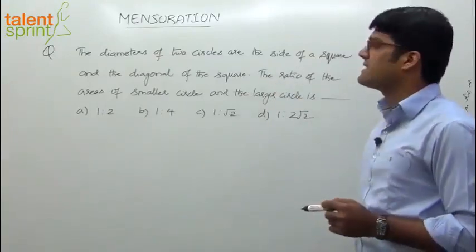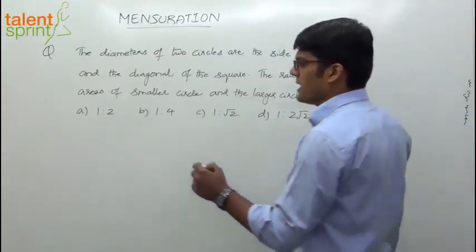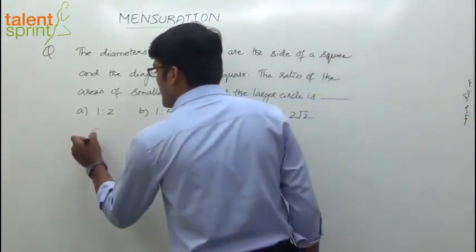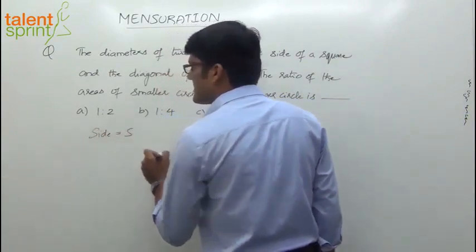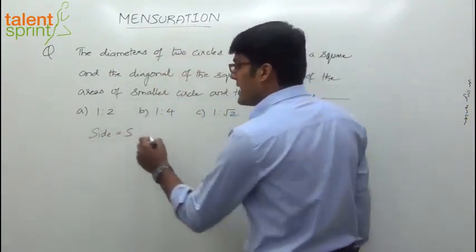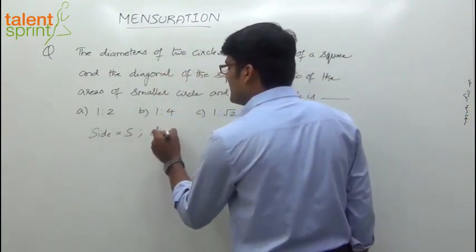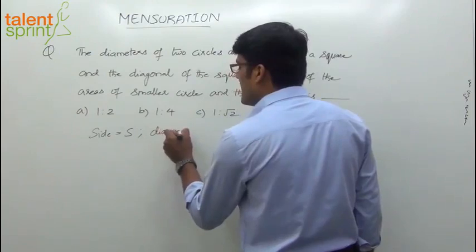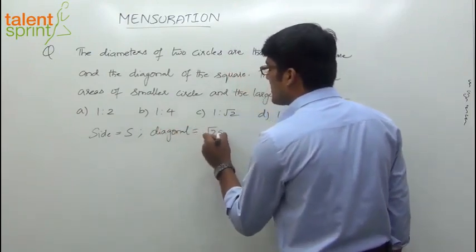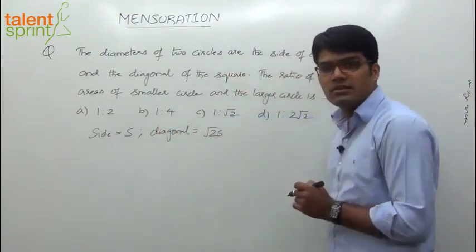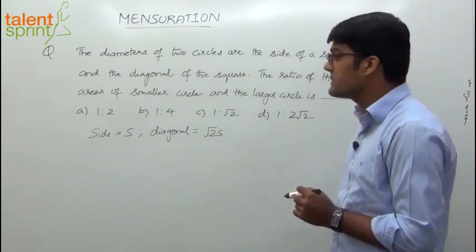Let us say the diameters of two circles are the side of the square and the diagonal of the square. Let us assume that the side of the square is S. If the side of the square is S, what will be the diagonal? You know that the diagonal of the square is root 2 times its side — root 2S. The diagonal of the square is root 2S.